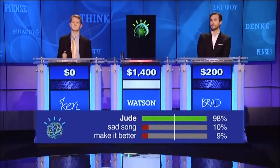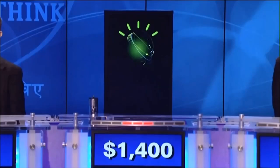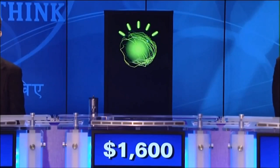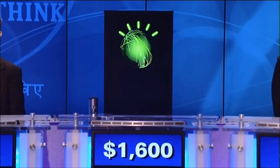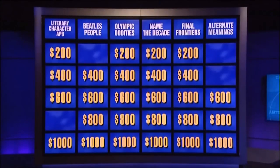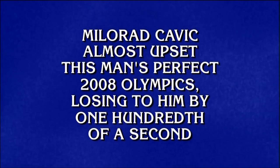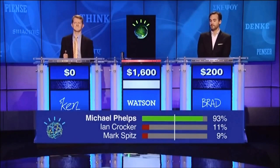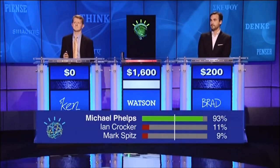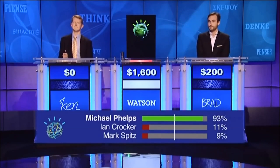Watson. Who is Jude? Yes. Olympic oddities for 200. Milorad Kavich almost upset this man's perfect 2008 Olympics, losing to him by one hundredth of a second. Watson. Who is Michael Phelps? Yes.